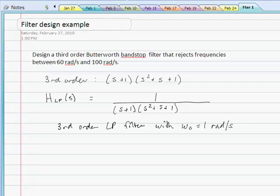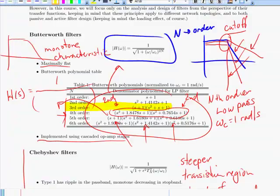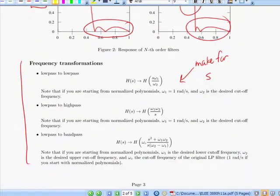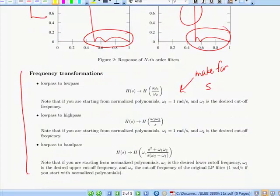Now, that's not what we want. We want a bandstop filter, and we want our cutoff frequencies to be something other than 1 radian per second. So let's go back to the handout and go to the formulas for the filter transformations, frequency transformation.